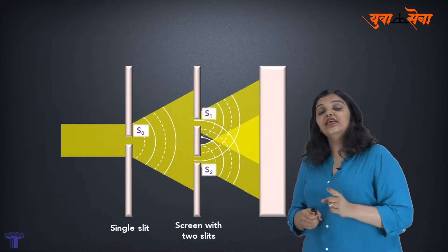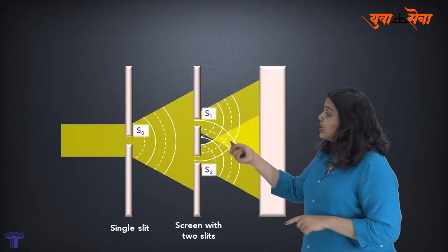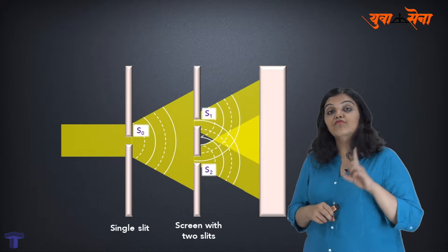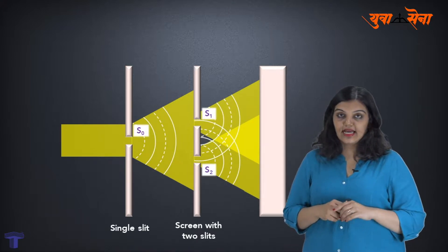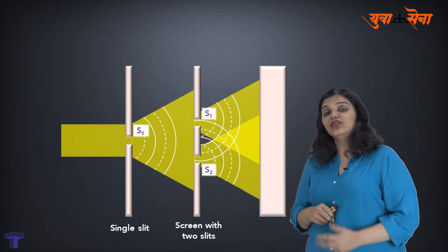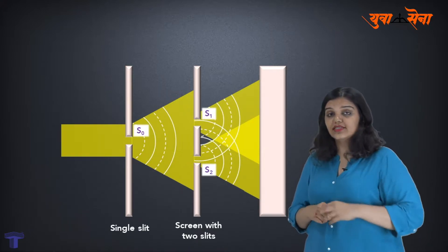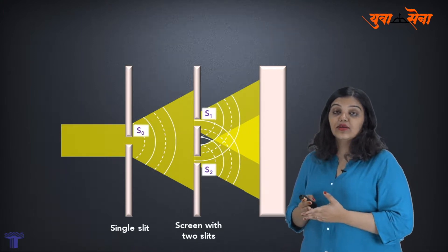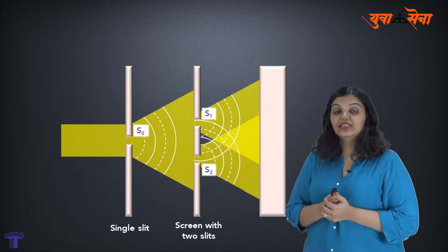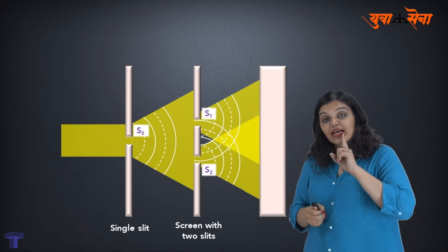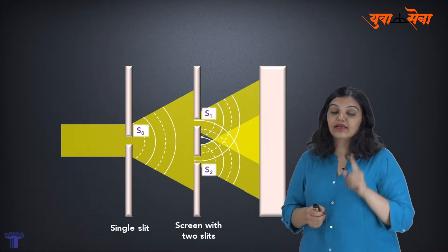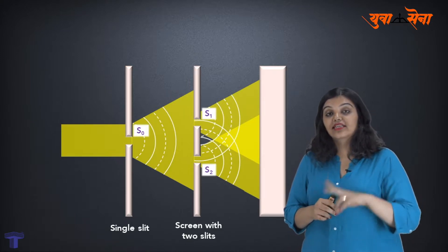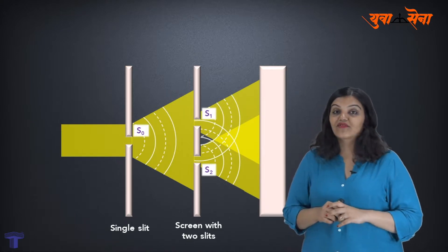However, in the standard Young's double slit experiment, the incoming light is monochromatic. But in our problem, we have been told there are two wavelengths: 720 nm and 480 nm. So right off the bat, let me explain what it means when there are two sets of wavelengths.